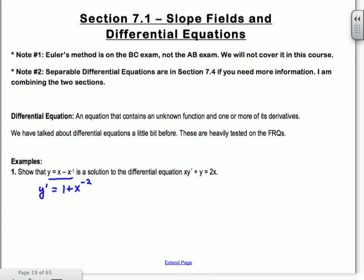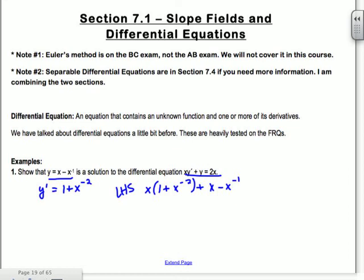Y' of the original is 1; the negative 1 exponent goes to the front, so it becomes plus X^(-2). Testing in the second equation: X times Y' — which is 1 + X^(-2) — plus Y, which was X - X^(-1). X times 1 is X, X times X^(-2) is X^(-1) (add exponents), plus X minus X^(-1). The X^(-1) and negative X^(-1) cancel, so you get 2X — that's the right-hand side.